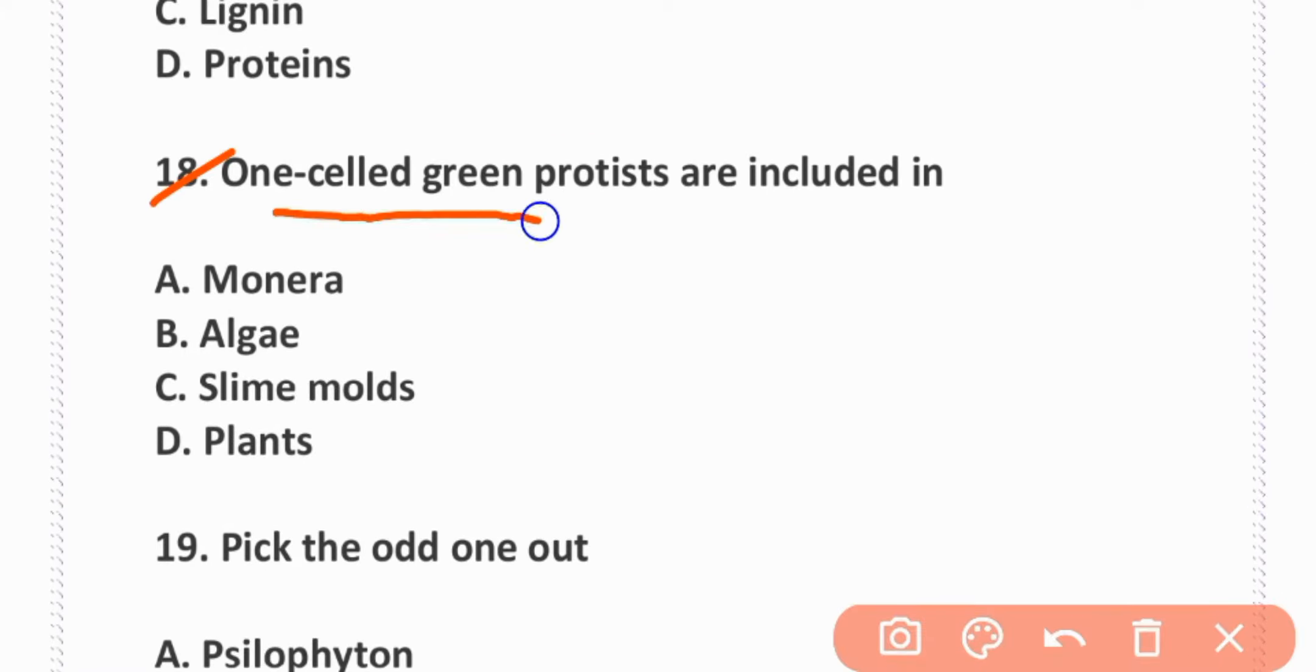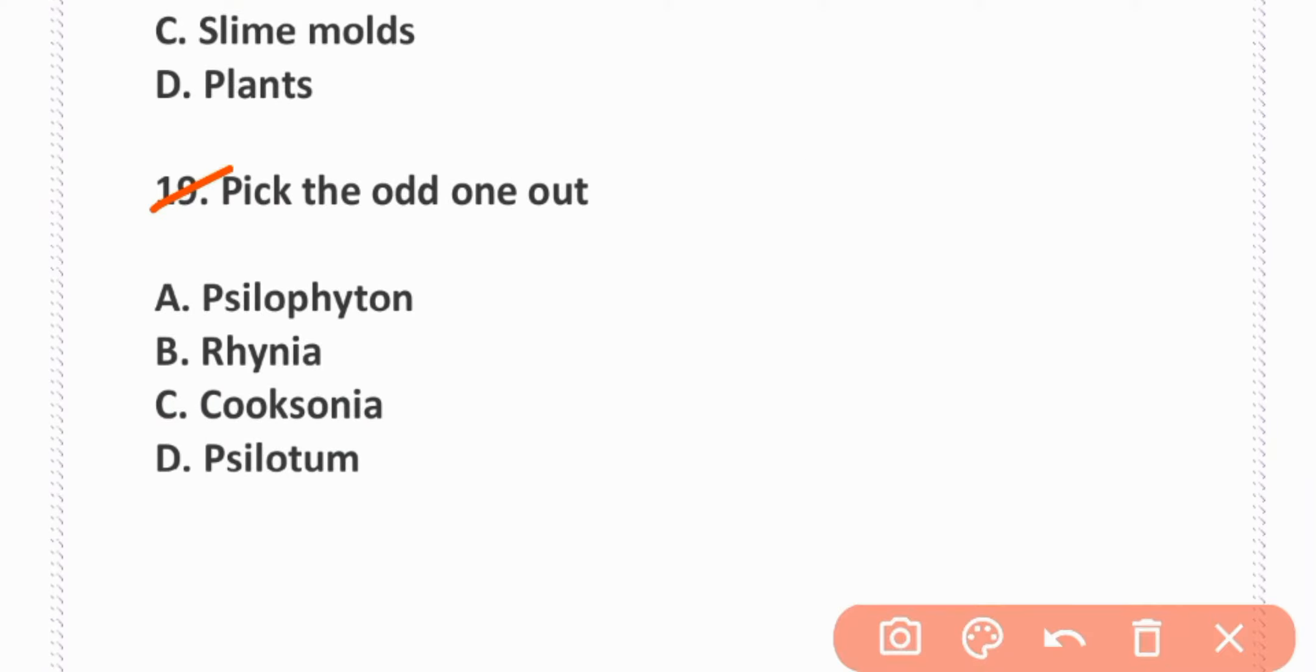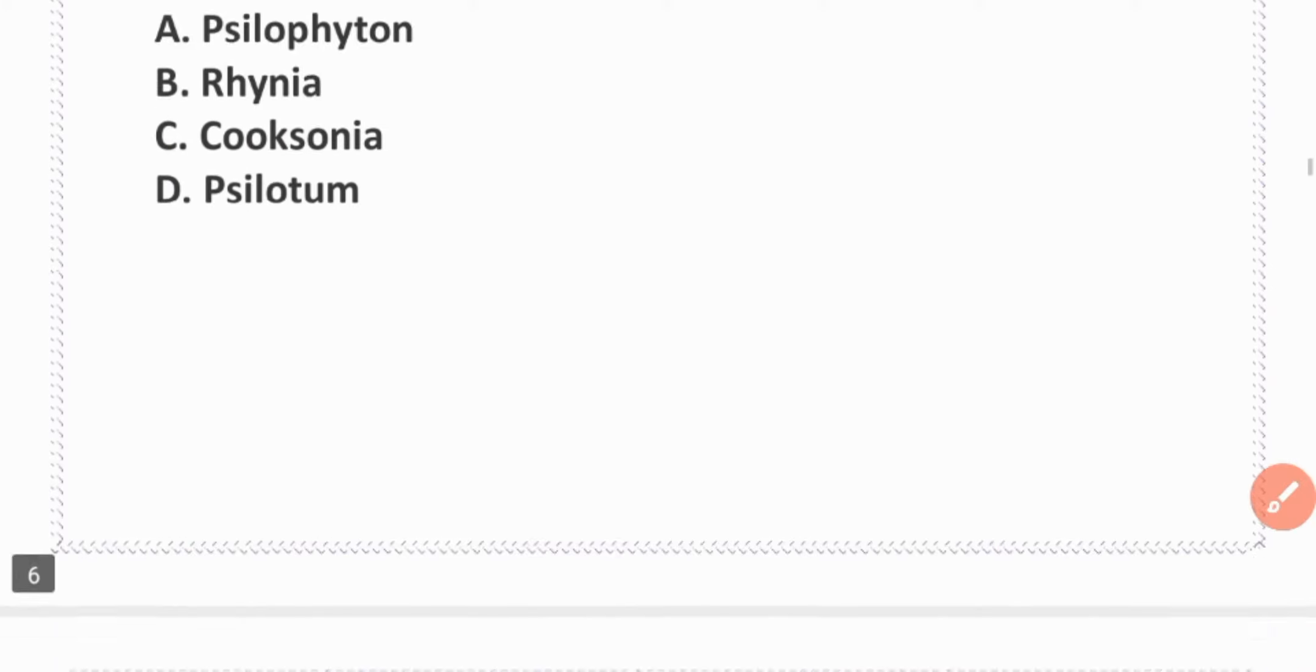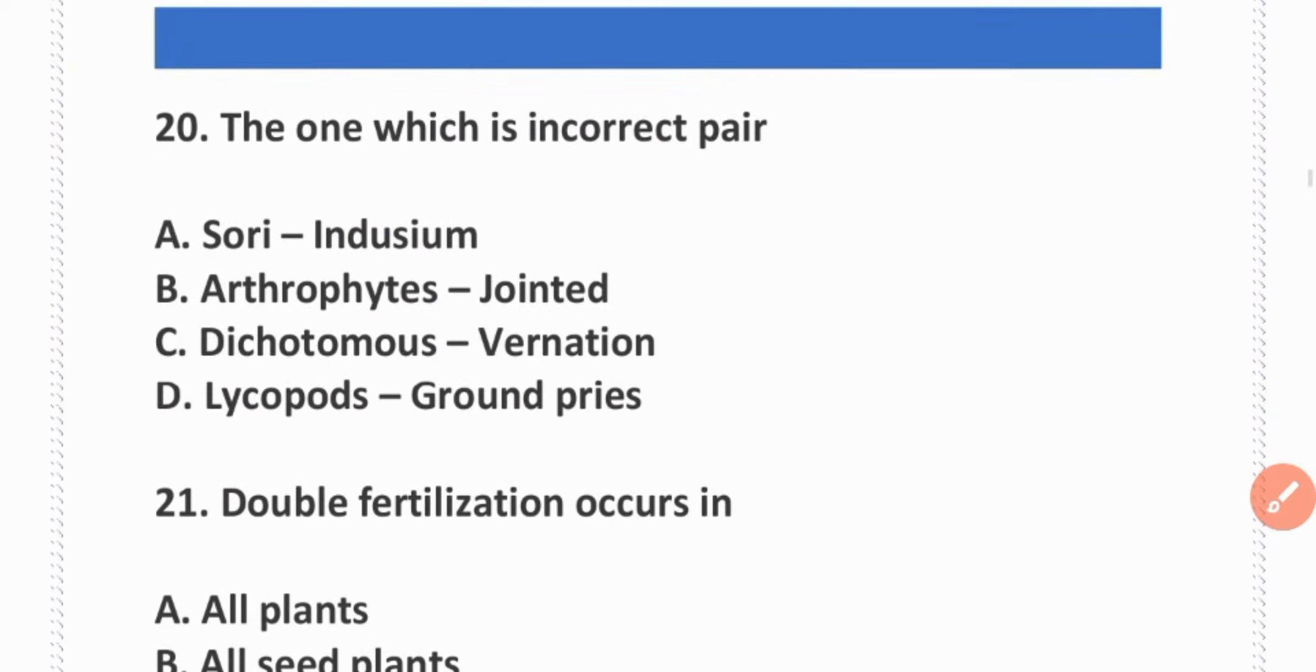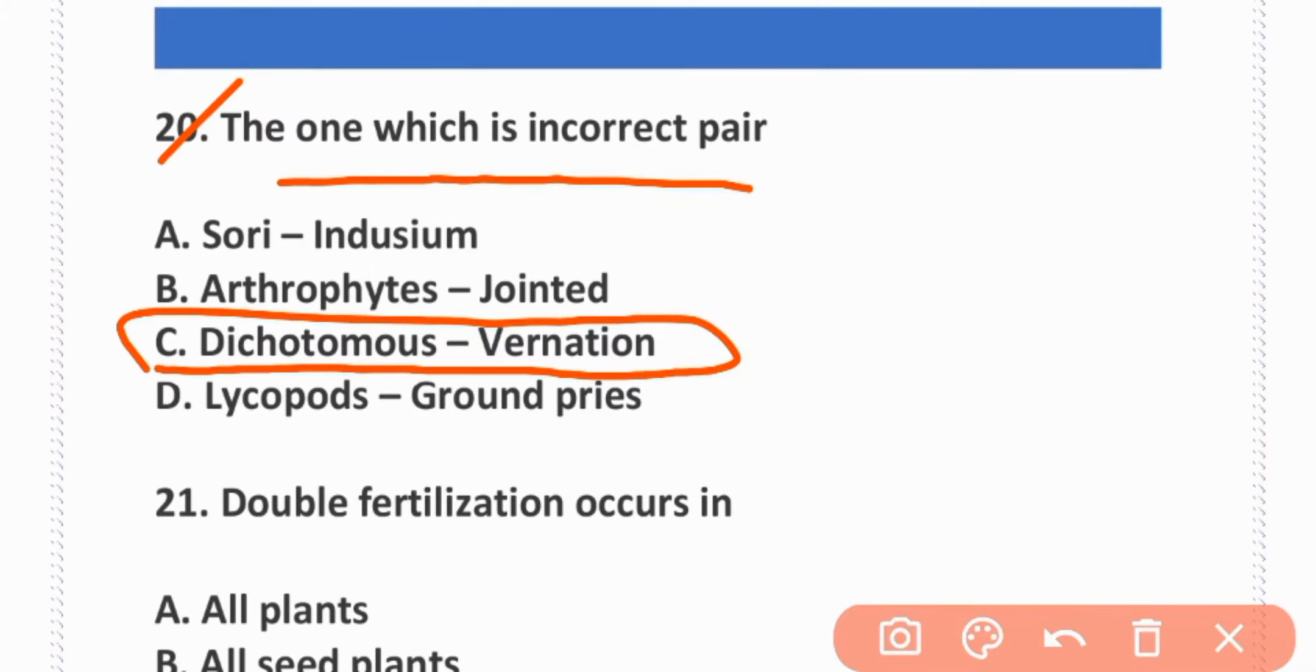The unicellular green protists are included in algae. Option B is correct. Pick the odd one out: Pteridophyta. B is correct.